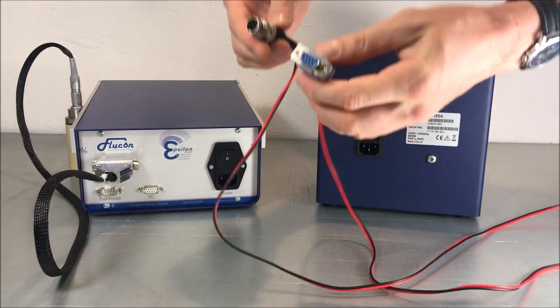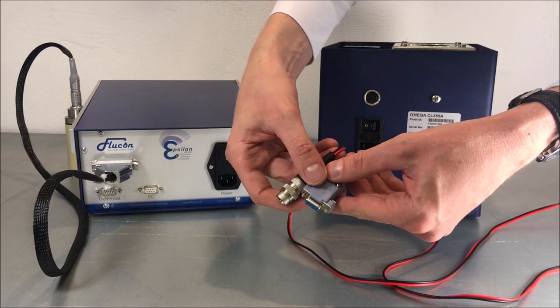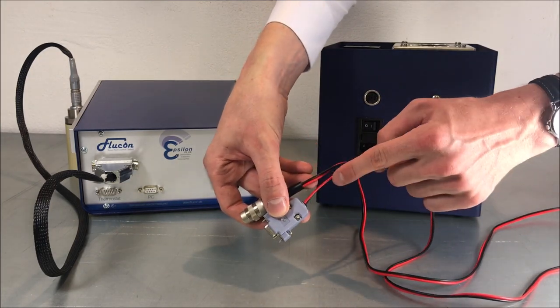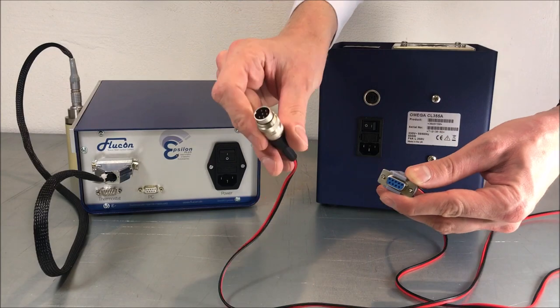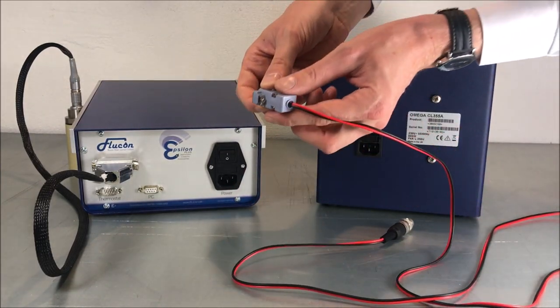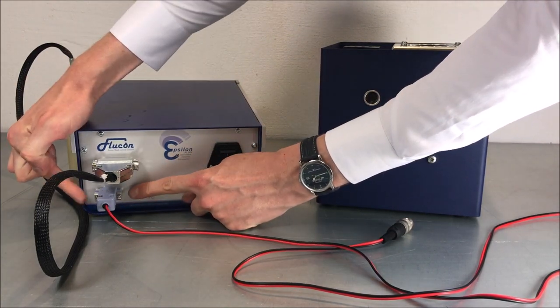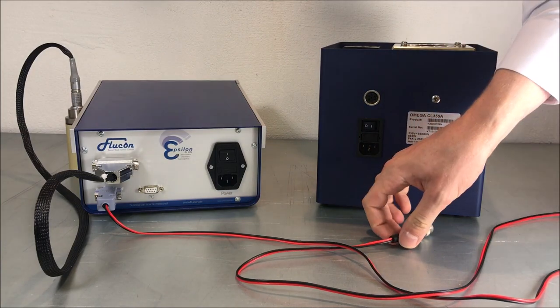After this, please connect the Epsilon Plus to the thermostat. Use the black and red cable and note that this is the thermostat plug while this is the plug for the Epsilon Plus socket. Again, use the screws on both sides to fix the connection.